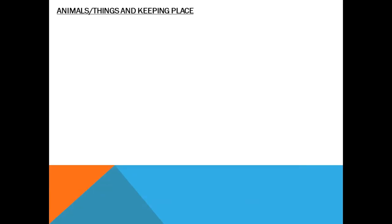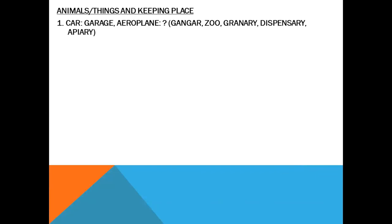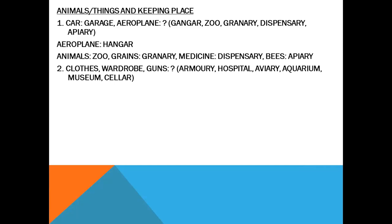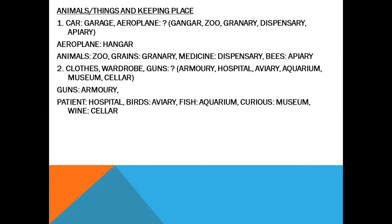Animal and its keeping place. Car — garage. Aeroplane — hangar. Animals — zoo. Grains — granary. Medicine — dispensary. Bees — apiary. Clothes — wardrobe. Guns — armoury. Patient — hospital. Fish — aquarium. Antiques — museum. Wine — cellar.